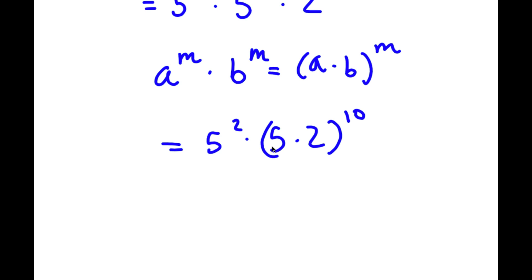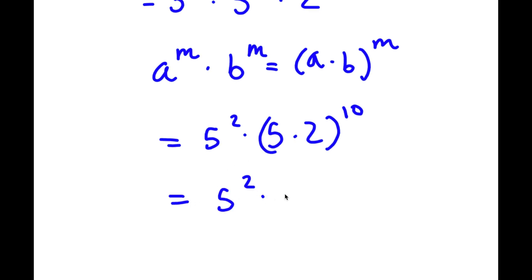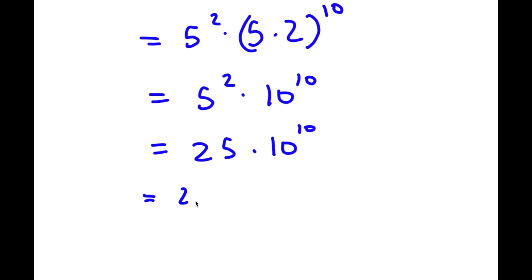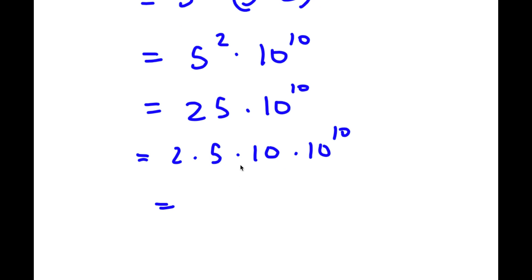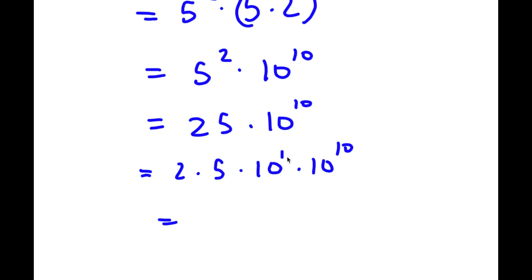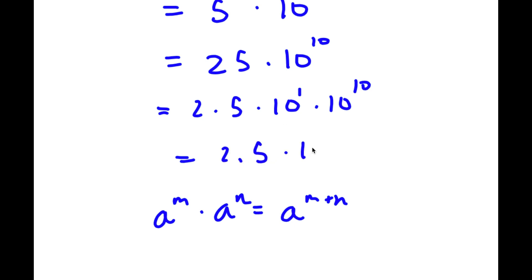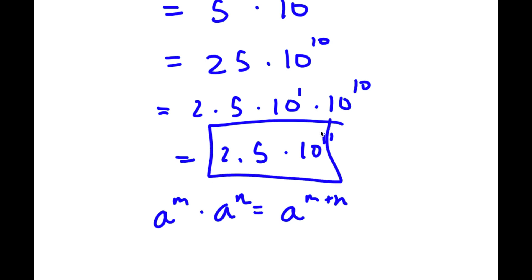5 times 2 is simply equal to 10. So now I have 5 to the power of 2 times 10 to the power of 10. Now 5 to the power of 2 equals 25. So I have 25 times 10 to the power of 10. And 25 is the same thing as 2.5 times 10. So I have 2.5 times 10 times 10 to the power of 10. Since 10 is 10 to the power of 1, and 10 to the power of 1 times 10 to the power of 10 equals 10 to the power of 11, I have 2.5 times 10 to the power of 11. That's my answer in scientific notation form.